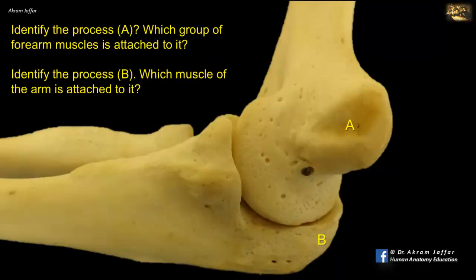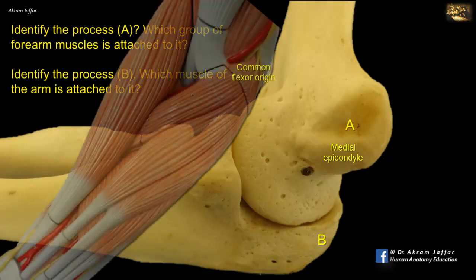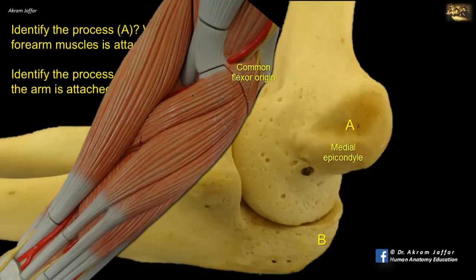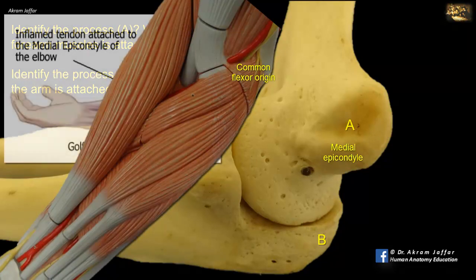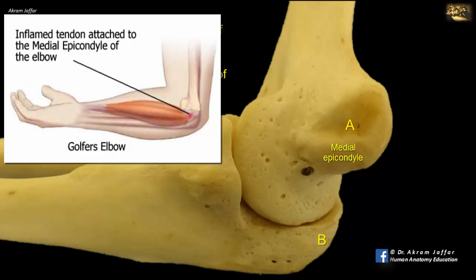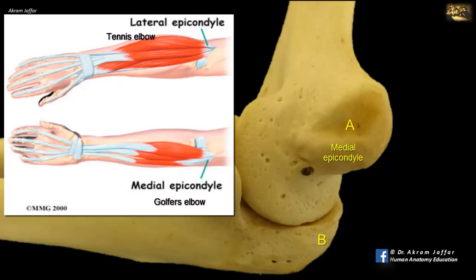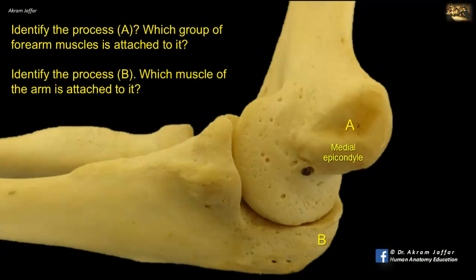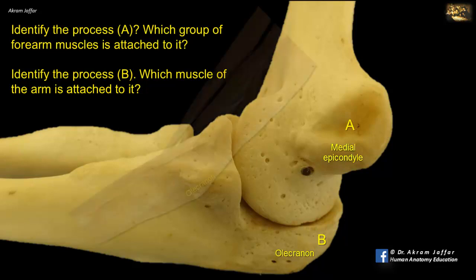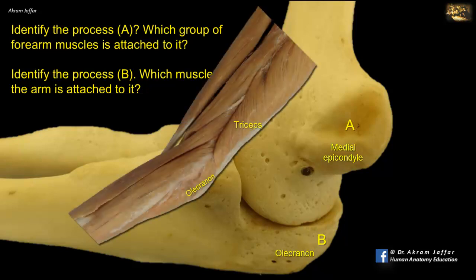Identify process A — which group of forearm muscles is attached to it. A is the medial epicondyle of the humerus that provides attachment for the common flexor origin of forearm muscles. Inflammation here causes golfer's elbow, which is in some ways similar to tennis elbow that affects the common extensor origin of the lateral epicondyle. Identify process B — which muscle of the arm is attached to it. B is the olecranon of the ulna that provides attachment for the triceps muscle.